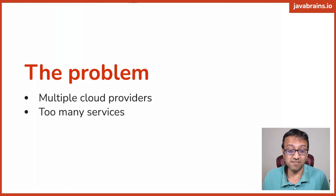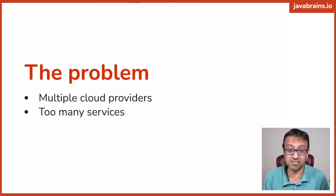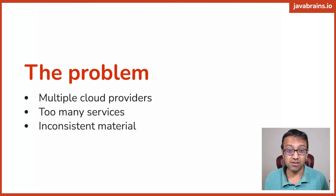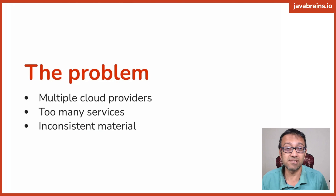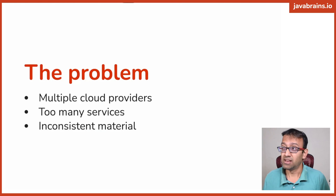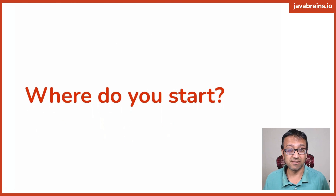And then once you pick a cloud provider, you have too many services. If you pick AWS, for example, you go to their website, you have hundreds of services. How do you start? And then you have inconsistent material. If you decide to pick one service and start learning, there are so many materials and things keep changing all the time. How do I get started?